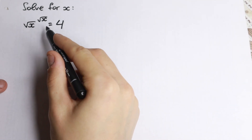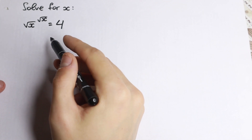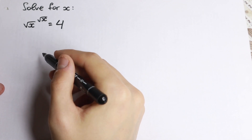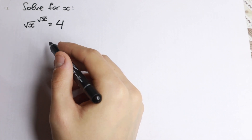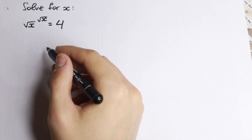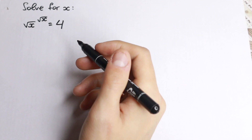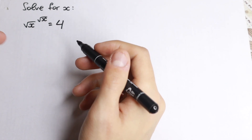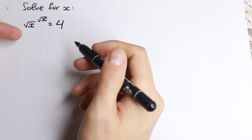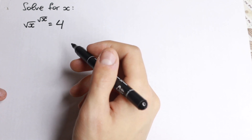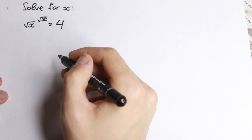We have the square root of x to the power square root of x equal to 4. How can you solve this interesting question? There are a lot of approaches — of course maybe most of you solve it by inspection — but in math we're interested in all solutions, so we need to solve it correctly and find all solutions.